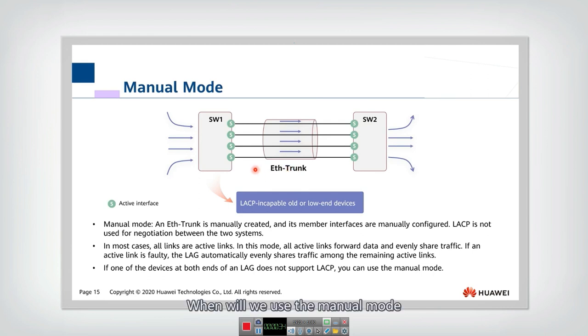And when will we use the manual mode? Actually you see in this example, we typically have two switches and multiple links between the two switches. So if one of the switches cannot support automatic link aggregation, it means one of the switches doesn't support LACP, link aggregation control protocol, then we can only use the manual mode to configure the ether trunk. Only when both switches support LACP, then we can use the automatic aggregation mode.